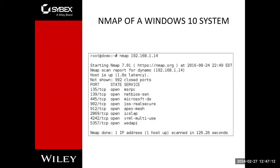Here's a simple NMAP scan using just NMAP and the IP address against a Windows 10 system. It's easy to tell it's a Windows system because you're typically going to see Microsoft Distributed Services, NetBIOS, MSRPC running on port 135. A Linux box can run these services too, but you have about a 9 out of 10 chance that this is a Windows box.